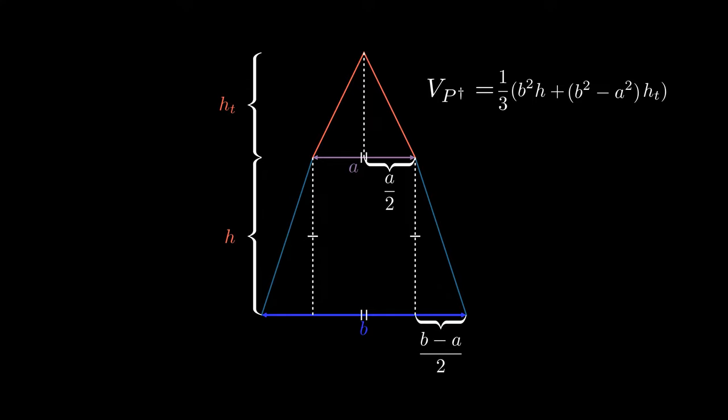Now notice that this triangle and this triangle both have the same gradient. The equation for gradient is rise over run. Now substituting the values for both triangles and equating them together, rearranging the resultant equation gives us the expression we were looking for.